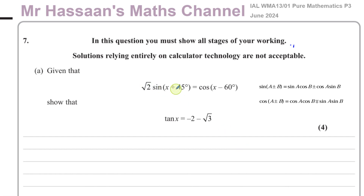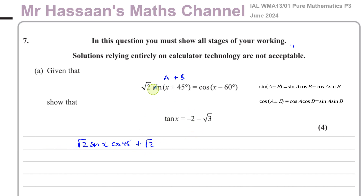So if we want to expand this, we have root 2 times the sine of (x plus 45). Here x is our A and 45 is our B. So we get: sine A times cosine B, which is sine x times cosine 45, plus cosine A times sine B, which is cosine x times sine 45. The root 2 will multiply both terms. That equals cosine of (x minus 60).